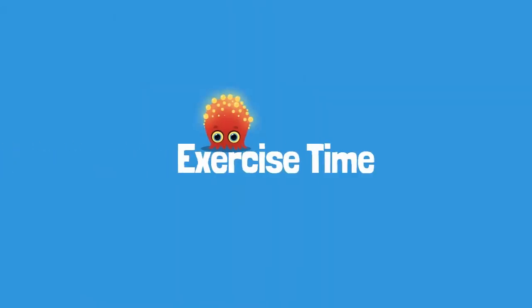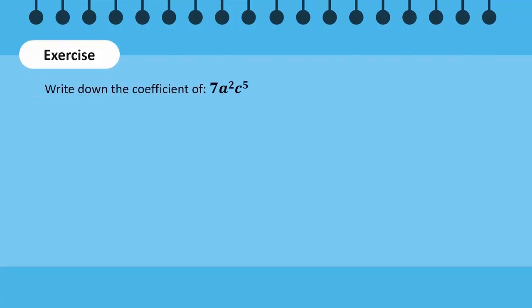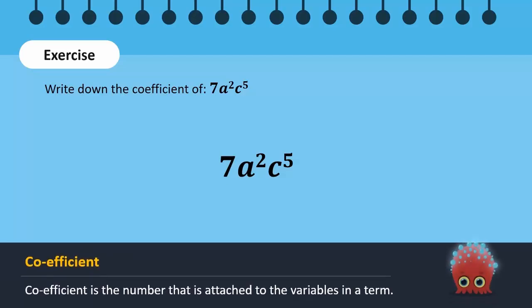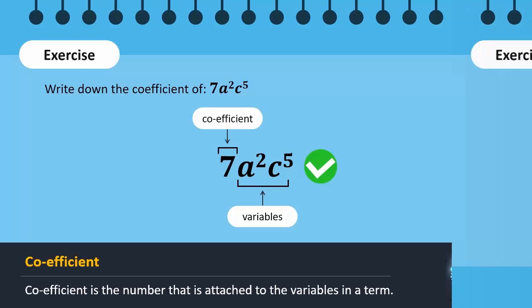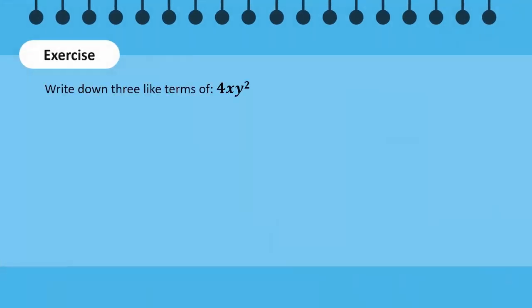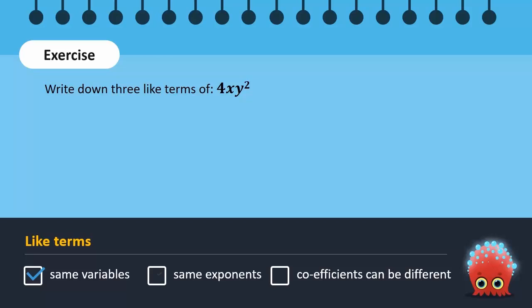Time for an exercise. Write down the coefficient of 7a squared, c to the power 5. We know that the coefficient is the number attached to the variables in a term. Here, the coefficient is 7, and a and c are the variables. Now write down 3 like terms of 4xy squared. For like terms, the variables and their exponents must be the same but coefficients can be different. So like terms of 4xy squared can be 2xy squared, minus 4xy squared, and 6xy squared.